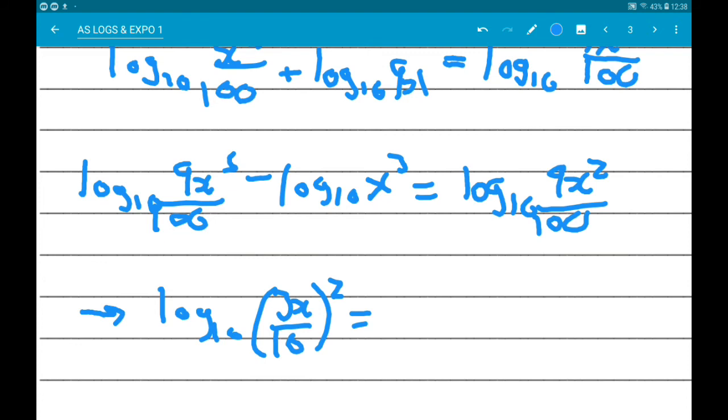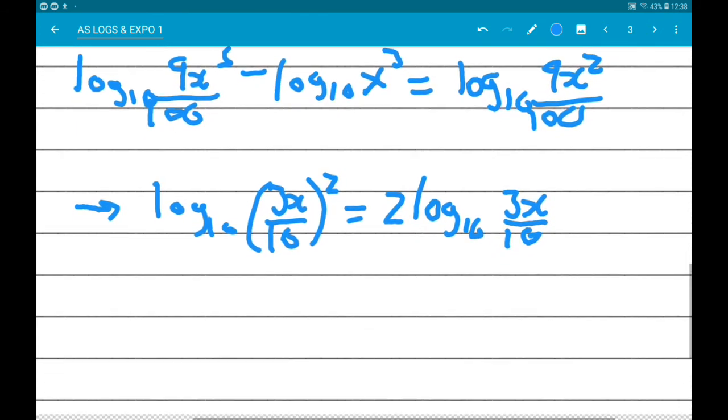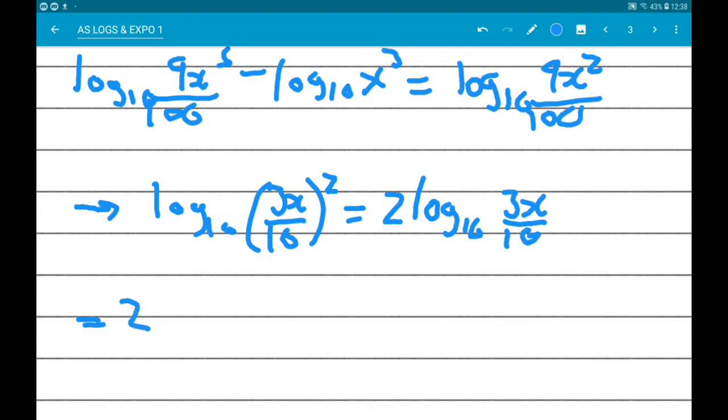Now that we can write as 2 times the log of 3x over 10. Now, we can think of that as 2 lots of log 3x over 10. We can split that log into a subtraction between two logs. So this is 2 lots of log of 3x minus log of 10.